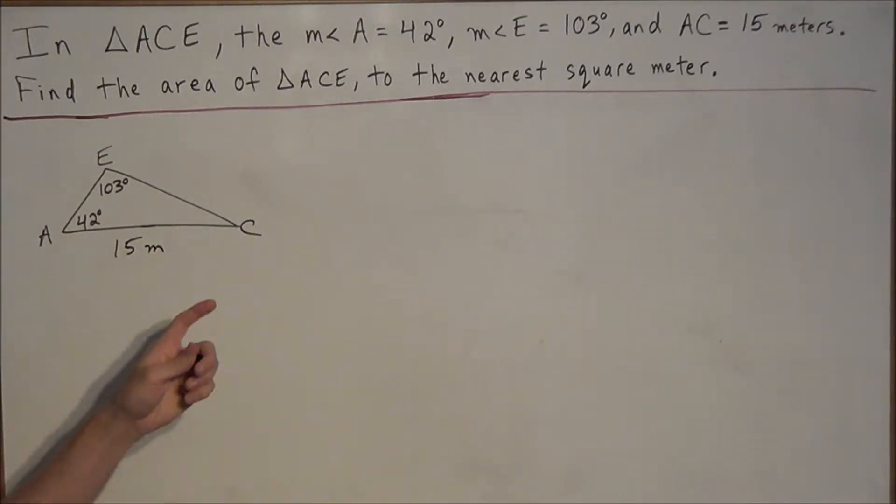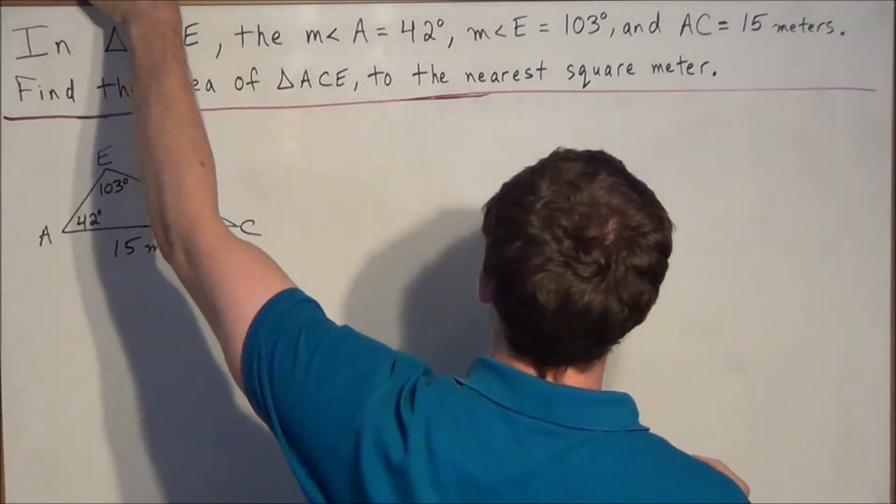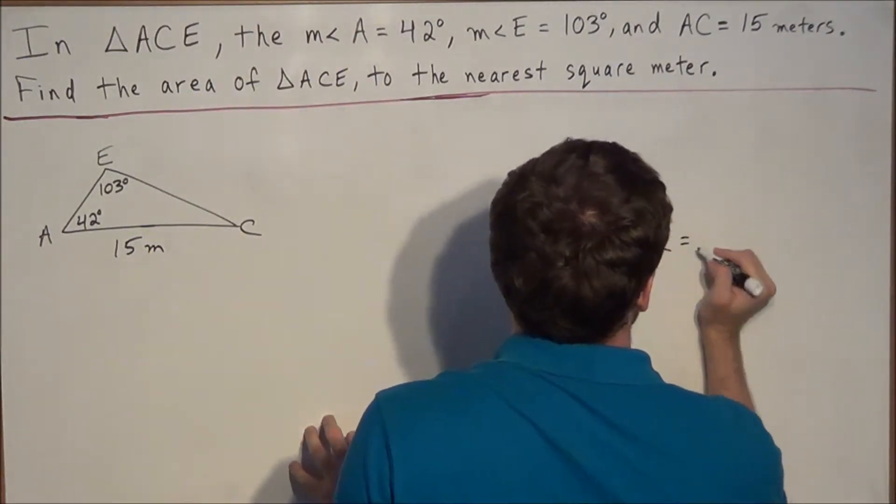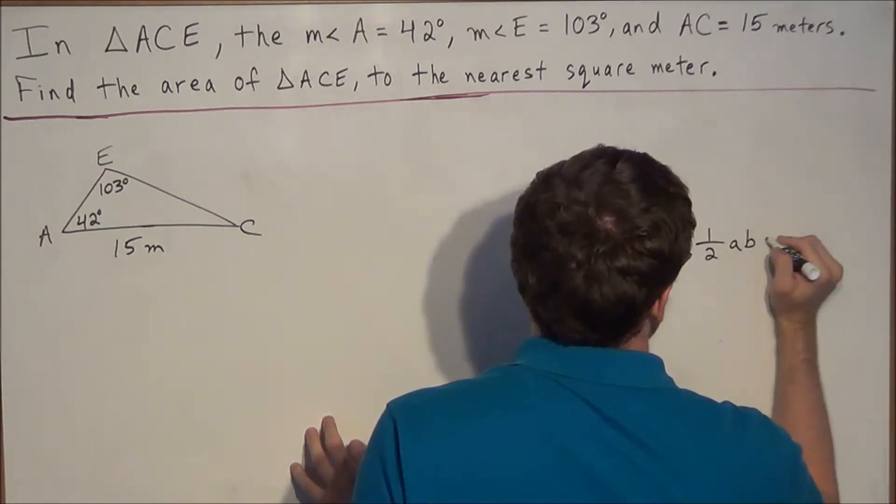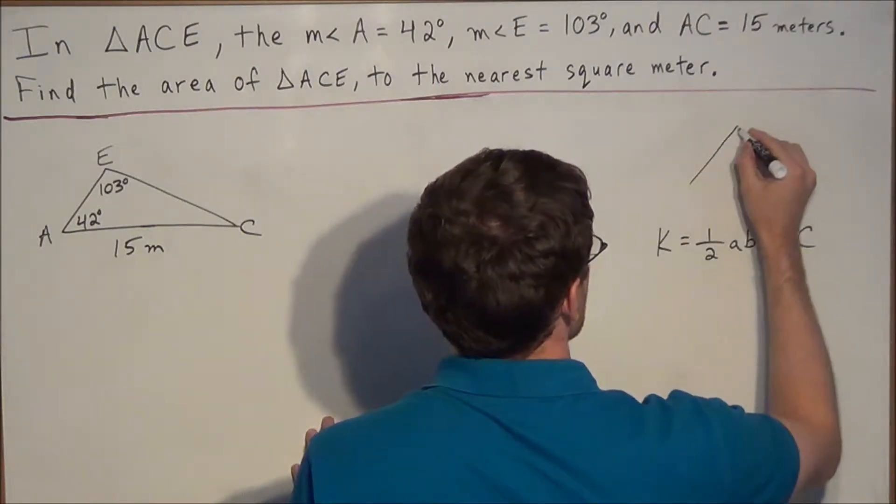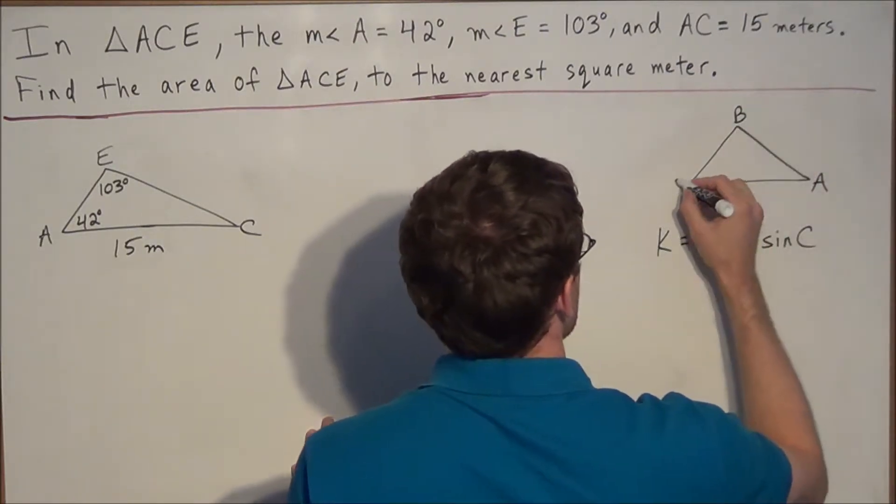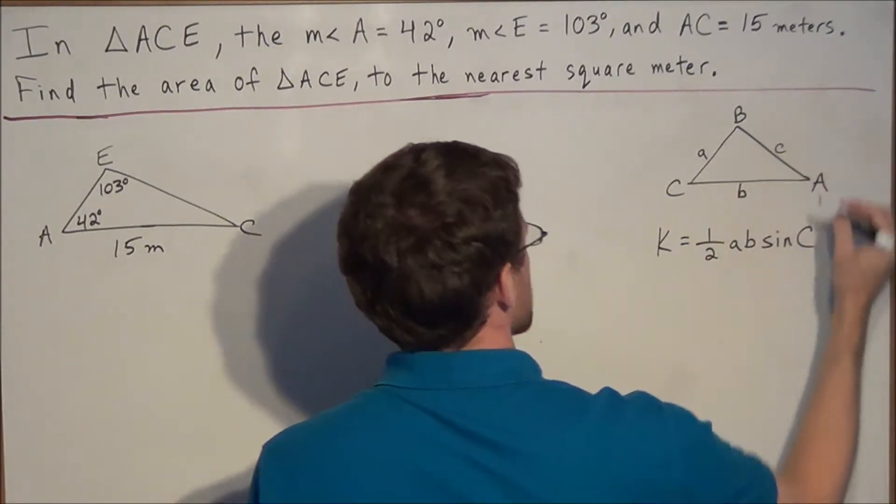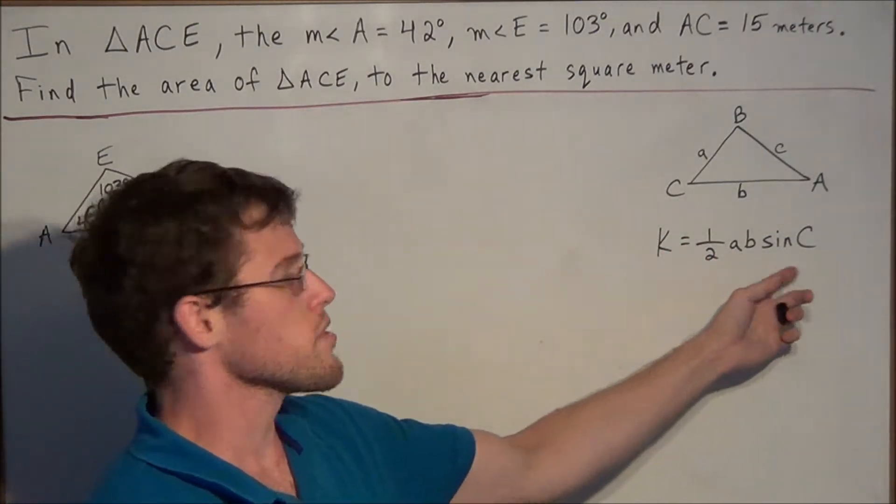And now the goal is to find the area of this triangle, and to do so we're going to make use of the following equation. We know that the area of a triangle expressed with capital K is equal to 1/2 AB times sine of angle C. And what we mean by this is that when we're looking at some triangle, we'll call this triangle ABC, with sides lowercase a, lowercase b, lowercase c, that we could find the area of the triangle when we know these three pieces of information.